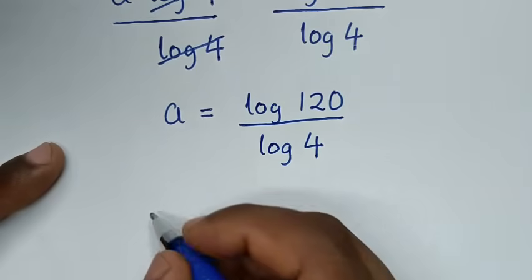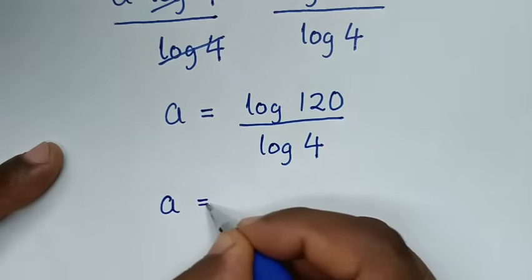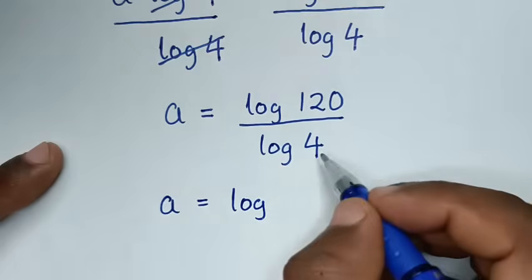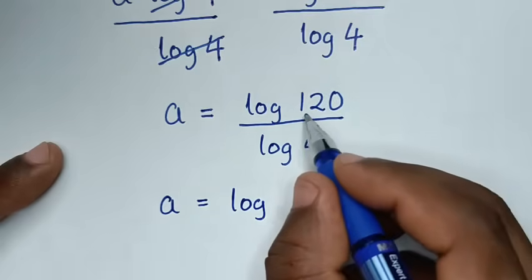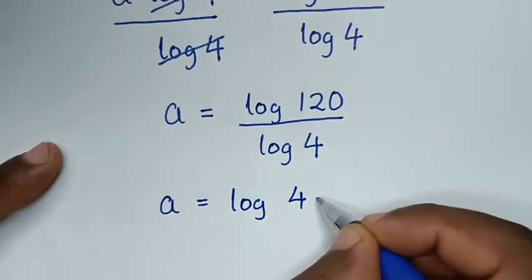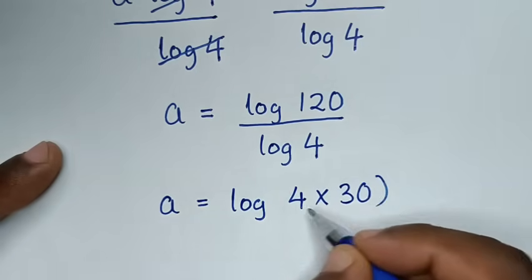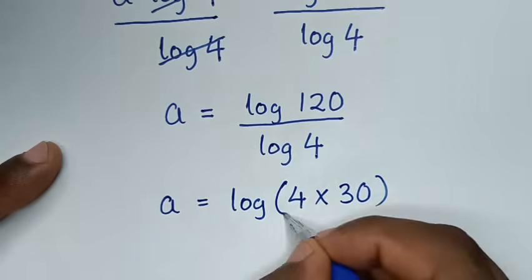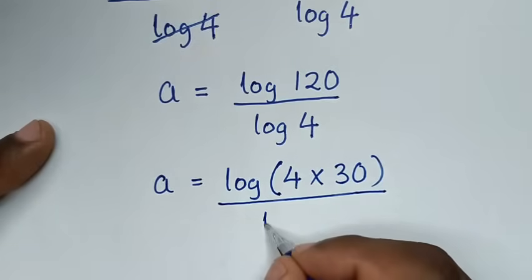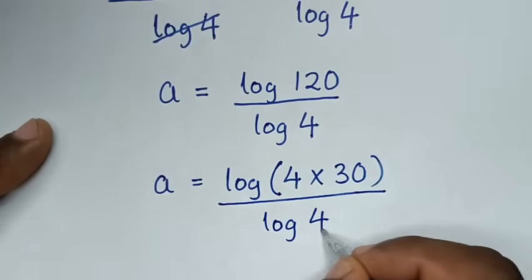In the next step, a is equal to log base 4 of 120. Now, 120 is the same as 4 times 30, so we write log of 4 times 30 over log of 4.